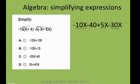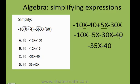However, negative 40 is just a constant. So let's do it. Negative 10x plus 5x minus 30x, I put them all together, and then I put the negative 40 to the side.